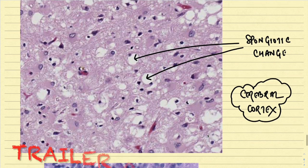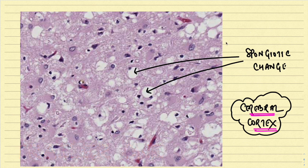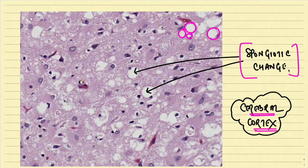This is the classical biopsy taken from the cerebral cortex, showing classical variable-sized microscopic vacuoles. Some of them are present in the neuropil and some are present within the cell body of the neurons or the perikaryon. This is called as the spongiotic change — the vacuolization is called as the spongiotic change.